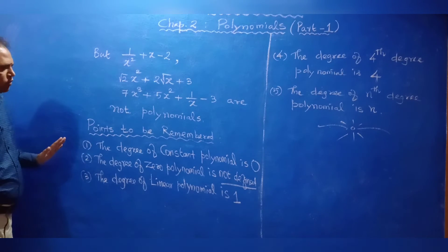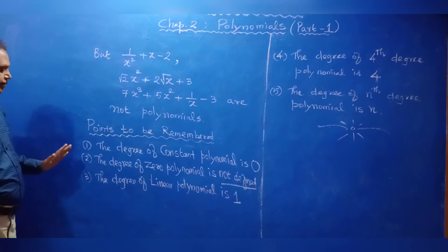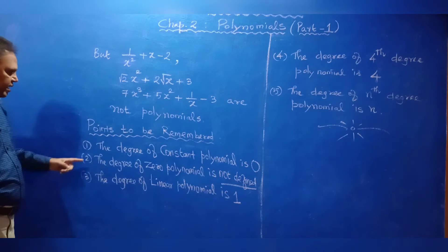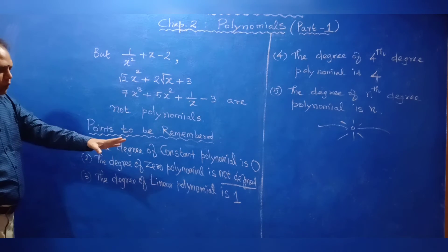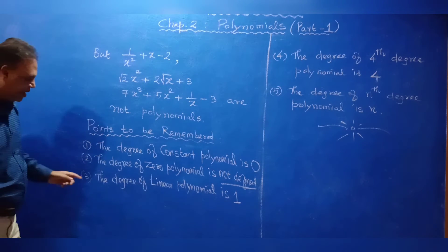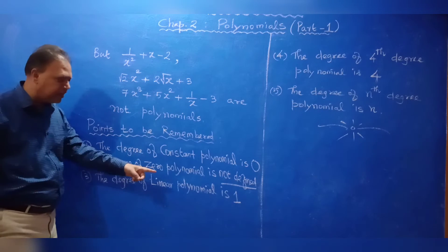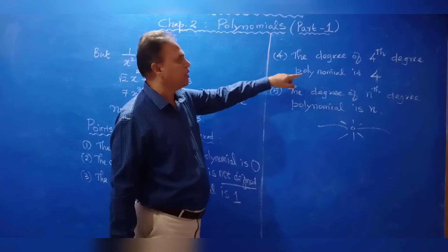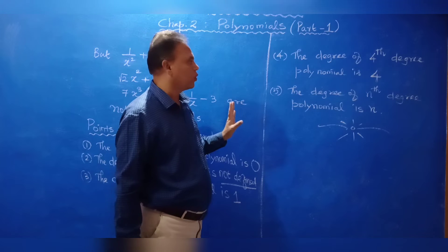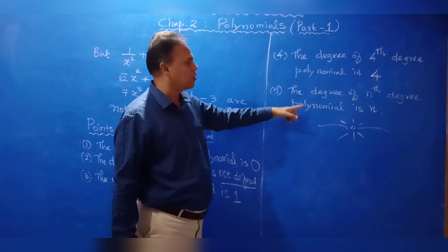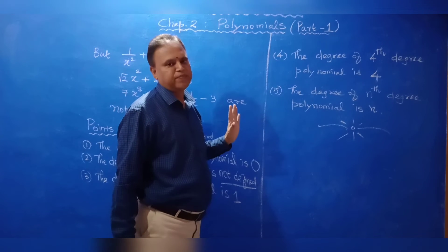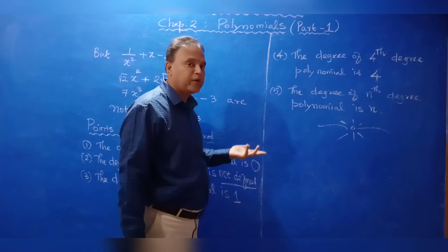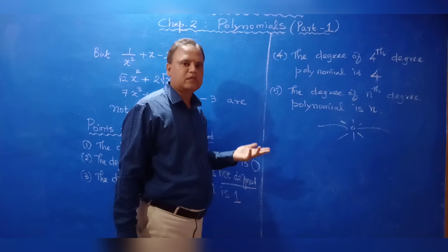Key points to remember: the degree of a constant polynomial is 0; the degree of the zero polynomial is not defined; the degree of a linear polynomial is 1; the degree of a quadratic polynomial is 2; the degree of a cubic polynomial is 3; the degree of an nth degree polynomial is n.